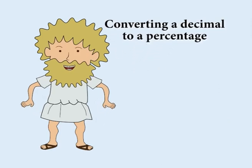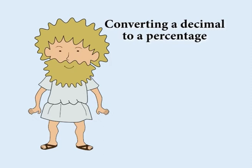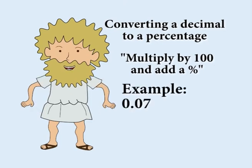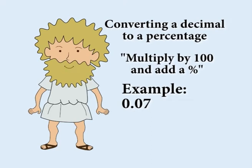You can also go back the other way. To convert a decimal number to a percentage, multiply by 100 and add a percent sign. For example, 0.07 multiplied by 100 is 7. So 0.07 is another way of saying 7%.